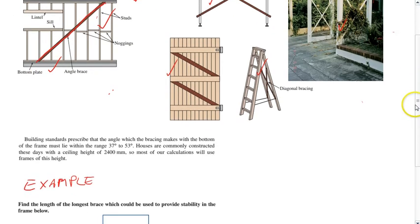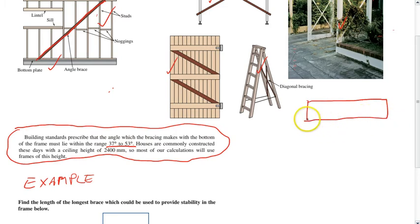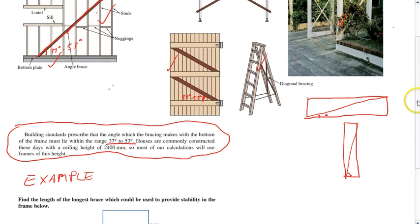Important to note, and this complicates the math that we have to do: building standards prescribe that the angle which the brace makes with the bottom of the frame must lie within the range 37 degrees to 53 degrees. These are important numbers. If you wanted to build a brace at too small an angle, you could not. The angle's too small, it's going to be useless. Similarly, if you had a big tall wall and put a brace at too steep an angle, it's going to be useless. Angles only work when the angle is somewhere between 37 degrees to 53 degrees.